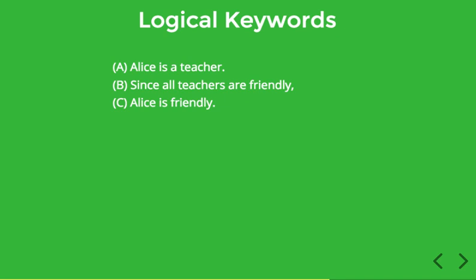'Since' is the key word here — 'since A, B' means that A is supposed to provide reasons for B, which is exactly what a premise is supposed to do with respect to a conclusion. So 'since' is a very strong indicator that you're dealing with a premise. Because it's always part of a more complex sentence, you'll have to pay attention to where the cutoff is between the first and second part of the sentence, but it's a very useful word.